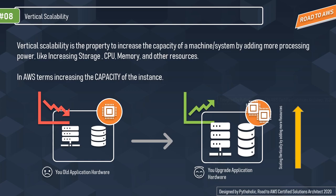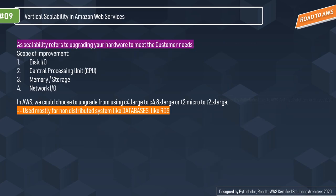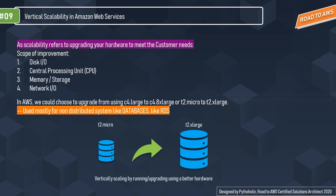Vertical scalability is most commonly used for mid-range and small to mid-sized companies. A common example is buying expensive hardware and using it as a virtual machine hypervisor. On the AWS side, you'll hear 'scaling up' when increasing capacity and 'scaling down' when decreasing. Scopes for improvement include disk I/O, CPU, memory or storage, and network I/O — for example, reducing latency.